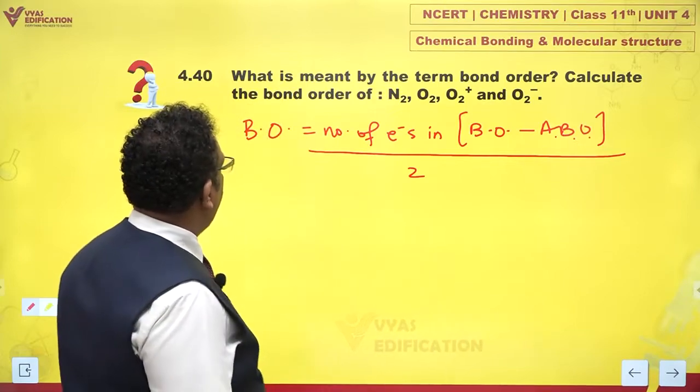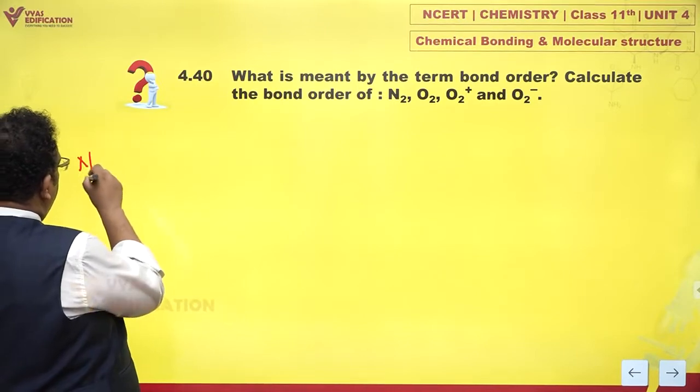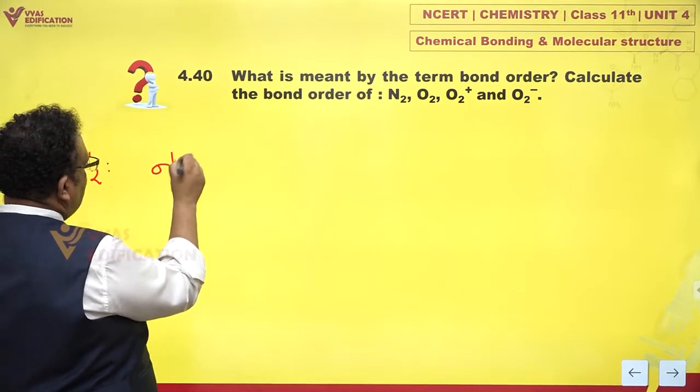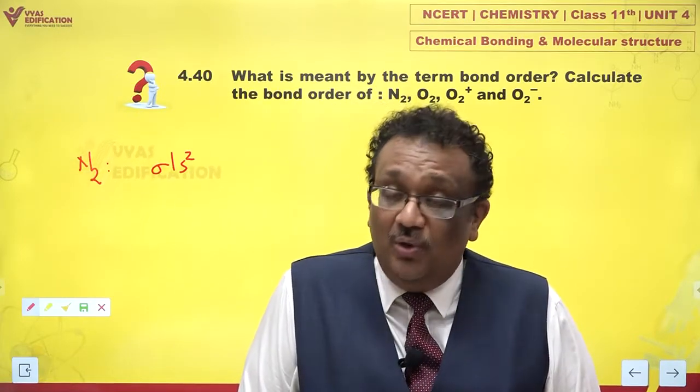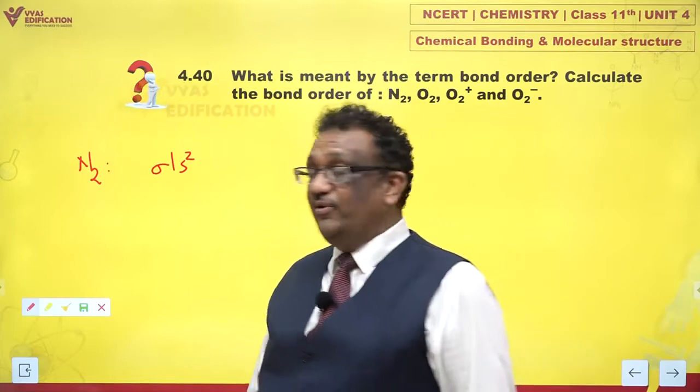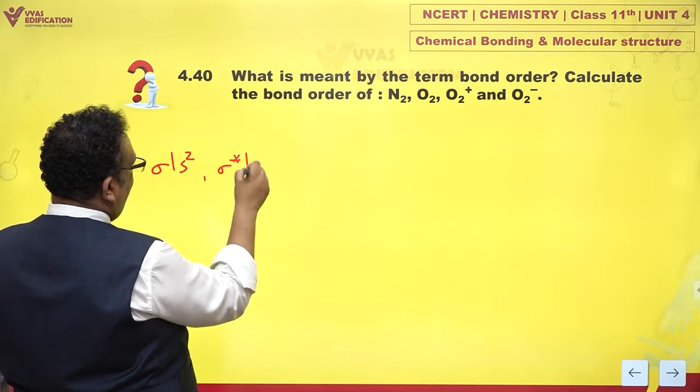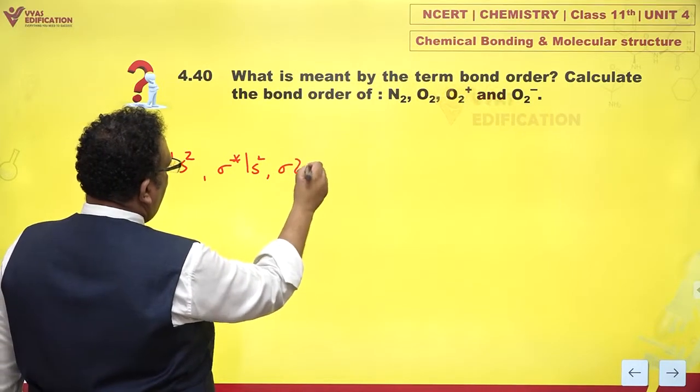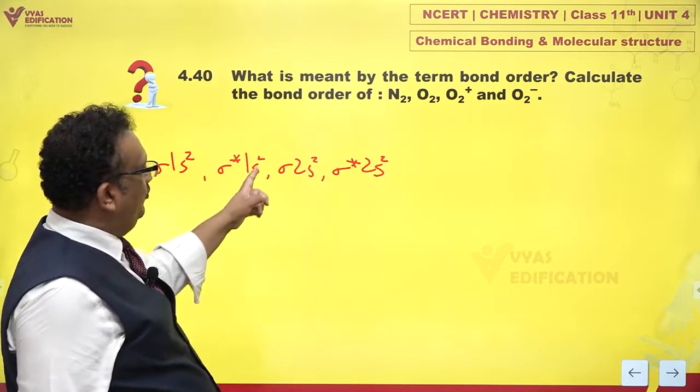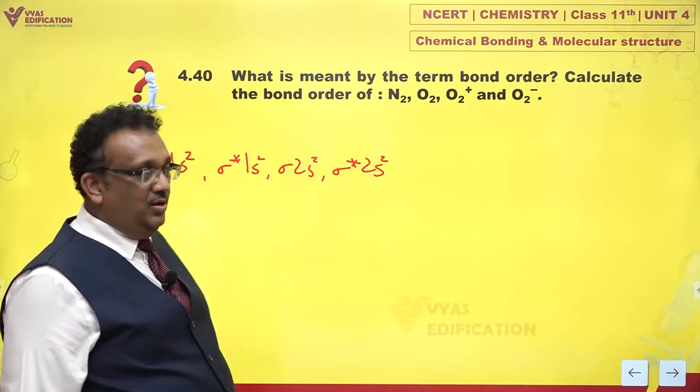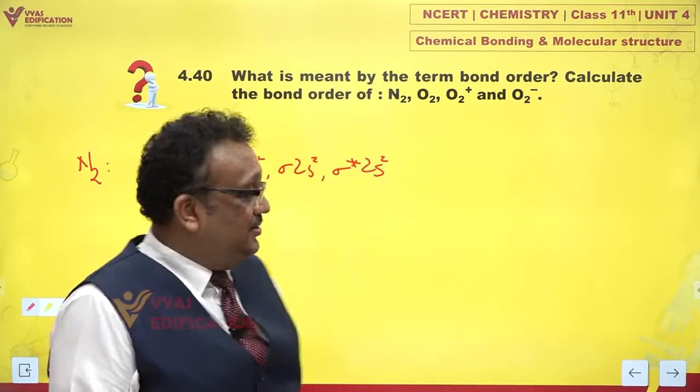Let us begin with nitrogen. Nitrogen is sigma 1s2. Now please remember, one nitrogen has seven electrons. So two nitrogens have together 14 electrons. We have to write till we reach 14 electrons. Sigma 1s2, sigma star 1s2, sigma 2s2, sigma star 2s2. Eight electrons are gone and we had a total of 14, so we are just left with six more electrons.